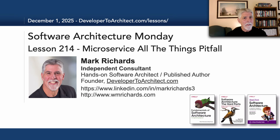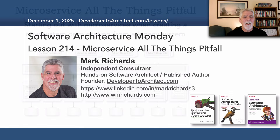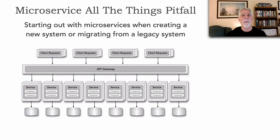An anti-pattern is something that seems like a good idea at the time and sometimes works but usually leads you down a bad path, whereas a pitfall is something that's never a good idea even from the start. The microservice all the things pitfall is starting out with microservices when creating a new system or migrating from a legacy system.